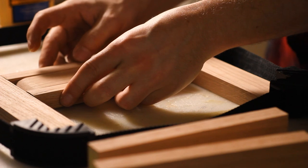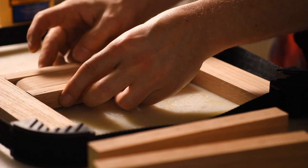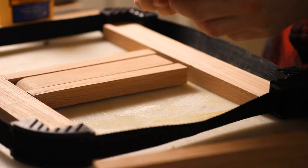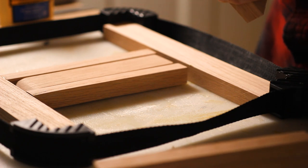A strap clamp makes the job pretty easy. This is all just basic butt joints, but of course you could go as fancy as you want with the joinery.